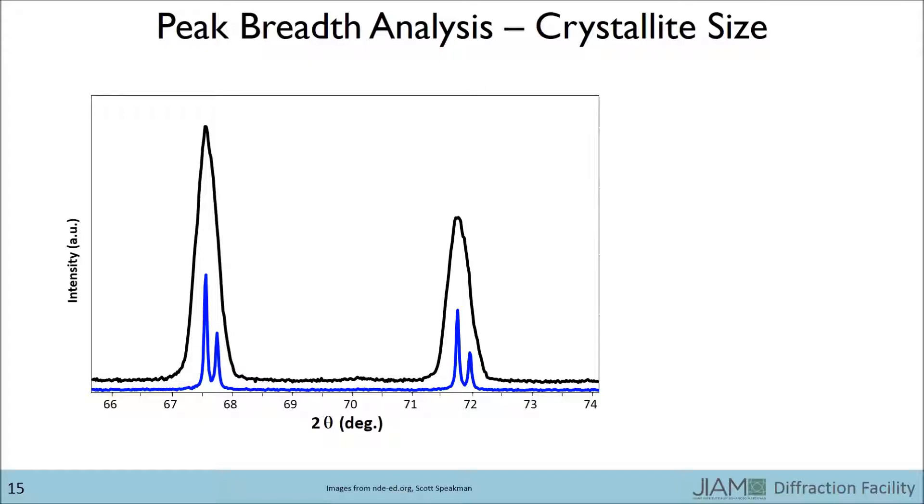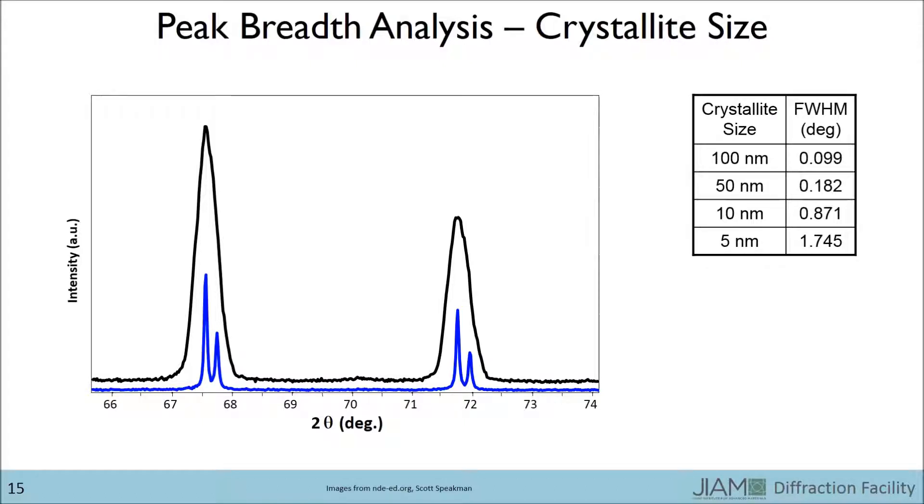Phase quantification utilizes peak intensities. We are able to obtain information from the breadth of the reflection too. For instance, if we have crystallite sizes of 100 nanometers, the full width half maximum, or FWHM, of the reflection should be around 0.1 degrees. If the crystallite size is reduced to 5 nanometers, the full width half maximum should be around 1.75 degrees.